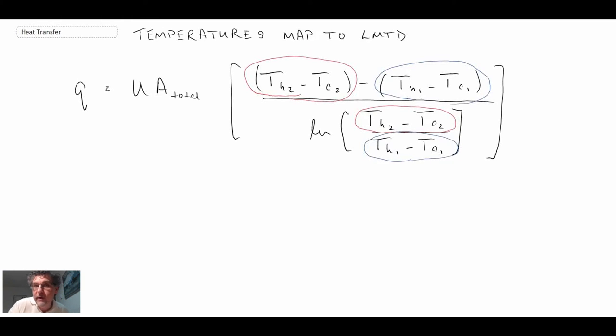But what we're now going to do is we're going to go back, and really this was in the derivation but I'm going to summarize it again and figure out what these temperatures are and how they map to where we are in the exchanger.